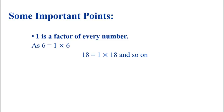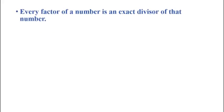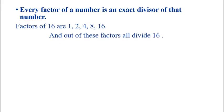Some important points. First, 1 is a factor of every number — for example, 6 = 1×6, 8 = 1×8, and so on. Second, every number is a factor of itself — for example, 7 is a factor of 7 because 7 = 1×7; 15 is a factor of itself because 15 = 1×15. Third, every factor of a number is an exact divisor of that number — for example, factors of 16 are 1, 2, 4, 8 and 16, and all of these divide 16 exactly.